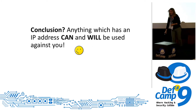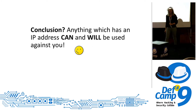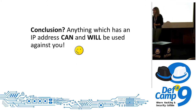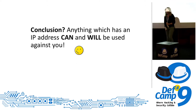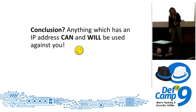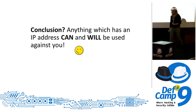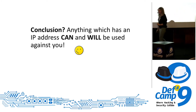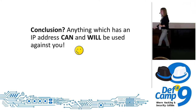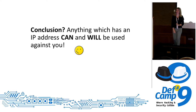So that was it. Remember that your watch and other appliances at home can have an IP, and anything that has an IP can and will be used against you. Thank you.